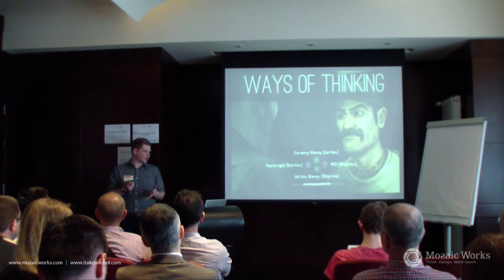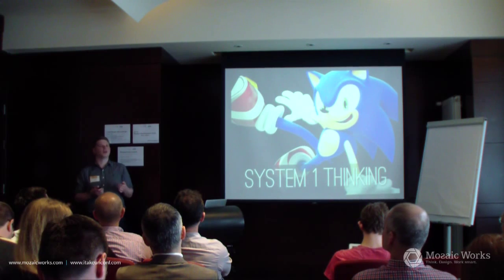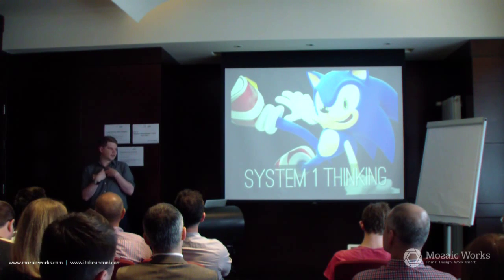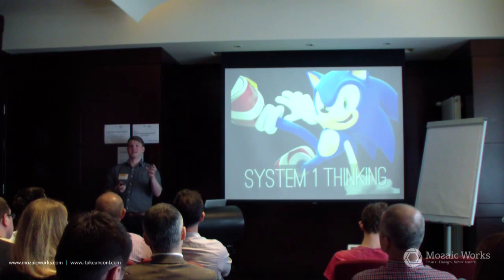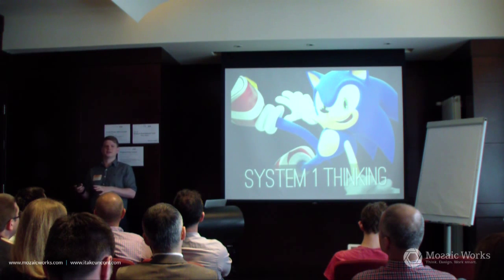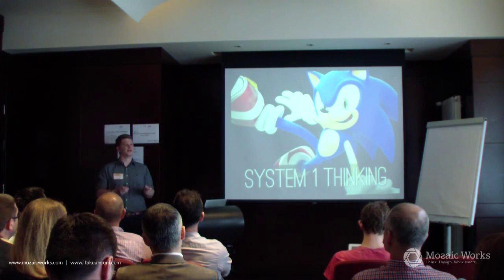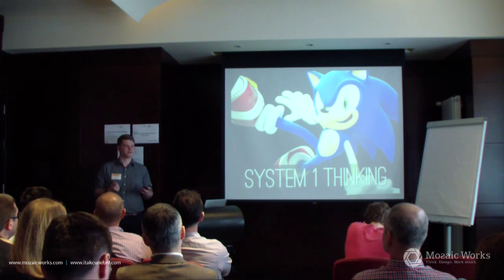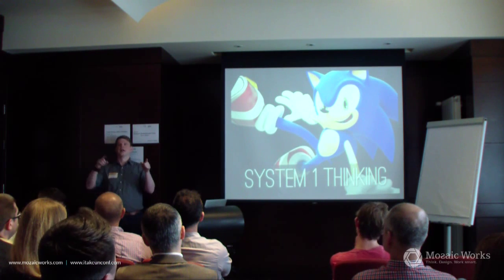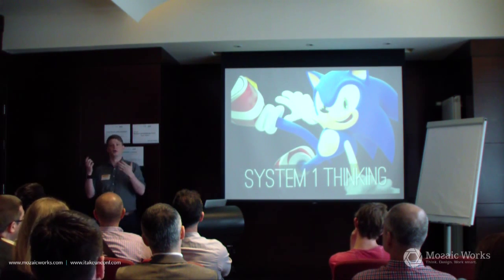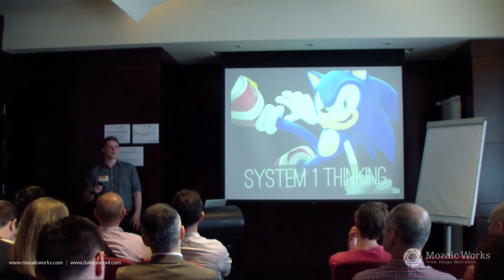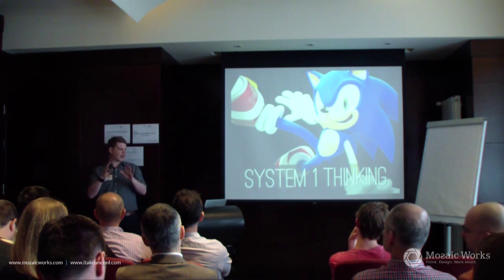The first type is called System 1 thinking — it's fast and intuitive, based on instinct and things we know internally. If you see someone's face snarling at you, you know instantly they're angry; you don't have to think about it. If I ask your age, you just know it. In programming, if you get a compilation error and think 'missing semicolon' — that's System 1 thinking, things you just know and can easily do.